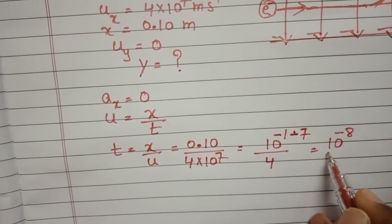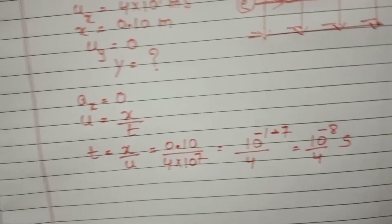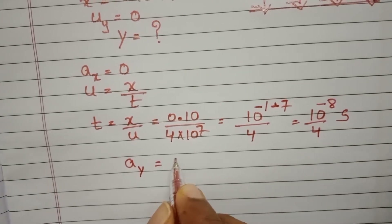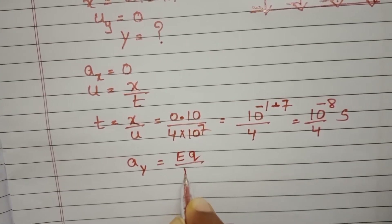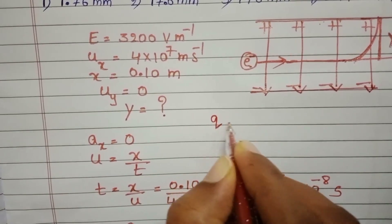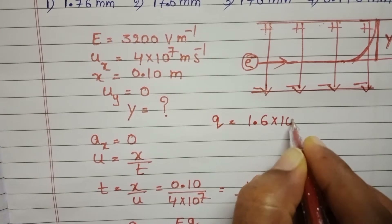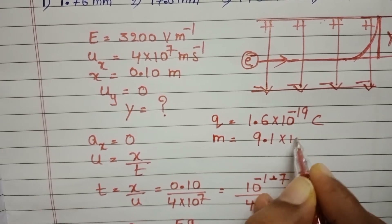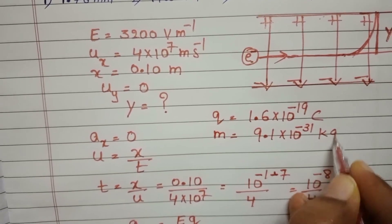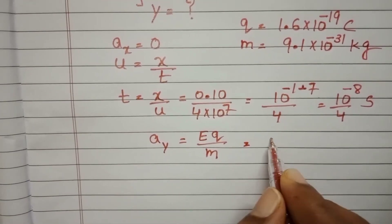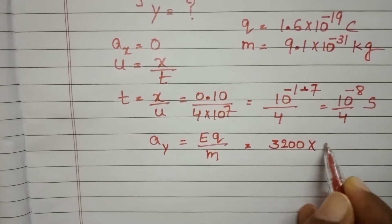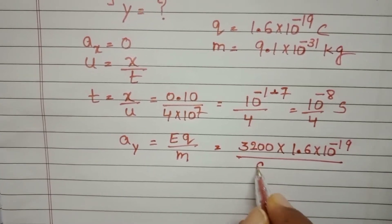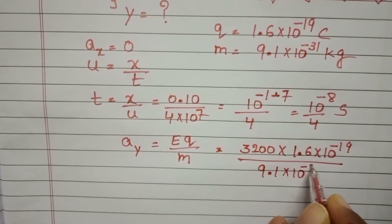That gives time equals 10 to the power minus 8 by 4 seconds. The electron travels along the y-direction within this same time. The acceleration of the electron along the y-direction is a equals Eq over m. Here, charge of electron Q is 1.6 into 10 to the power minus 19 coulombs and mass of the electron is 9.1 into 10 to the power minus 31 kg. So acceleration equals 3200 into 1.6 into 10 to the power minus 19, divided by 9.1 into 10 to the power minus 31.